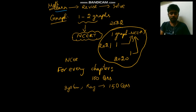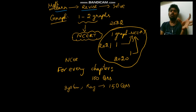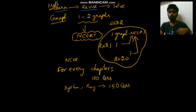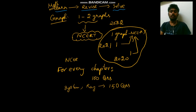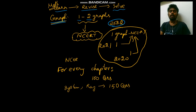We need to learn physics and methodology. First, learn a chapter and learn the formulas. We need to revise the whole chapter and solve these questions. In this example, the graph compulsory one question is asked — one or two questions are asked. In 2022, two questions were asked.